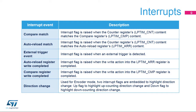These two interrupts are useful in mitigating the overhead of polling on the status of writing to these two registers when the peripheral core clock is too slow compared to the APB interface clock. The up-and-down direction change interrupts are raised when the encoder mode function is enabled and the counting direction changes from up to down or vice versa. The counting direction of the low-power timer's counter reflects the rotation direction of the quadrature sensor.